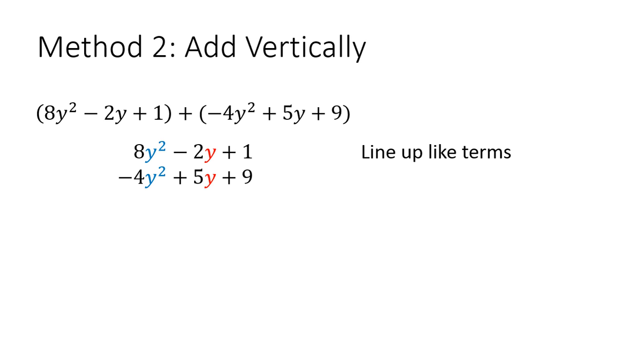I just rewrote my first polynomial expression at the top, and then the second one went at the bottom. So I lined them up by like terms. 8y² went with the -4y², the -2y went with the 5y, and the 1 went with the 9.